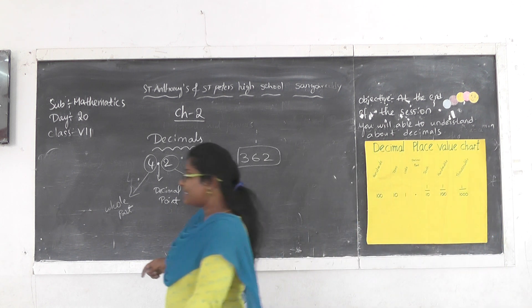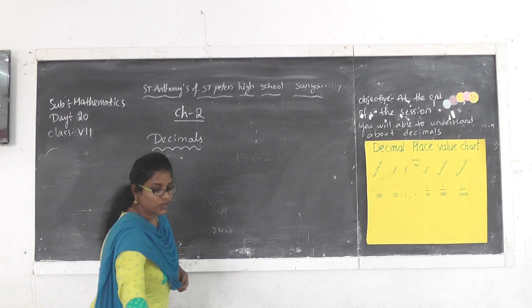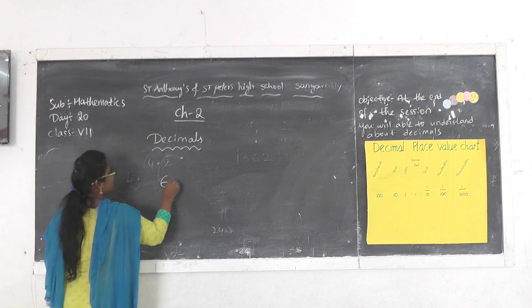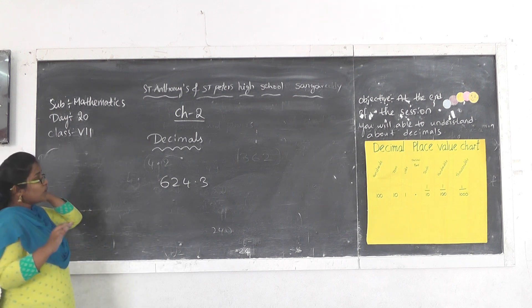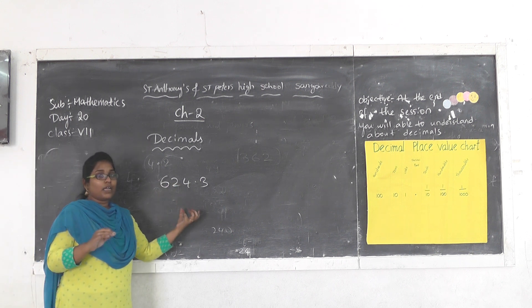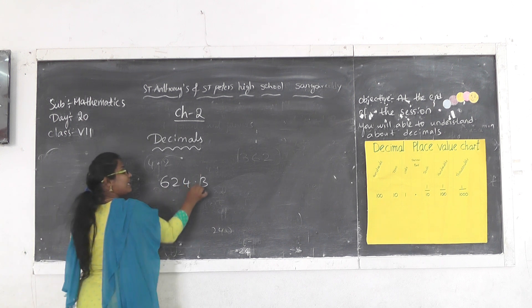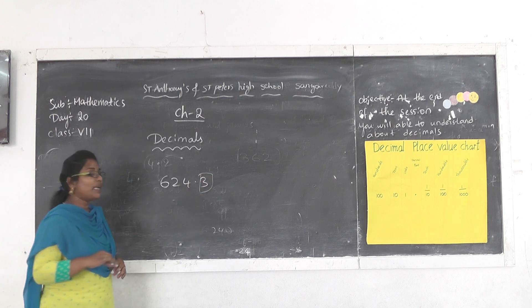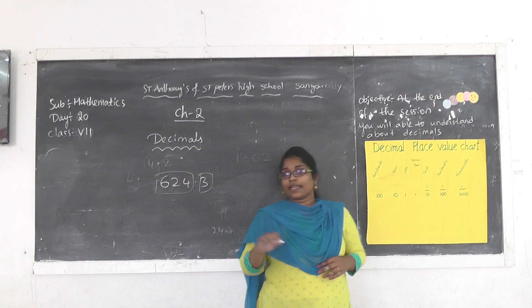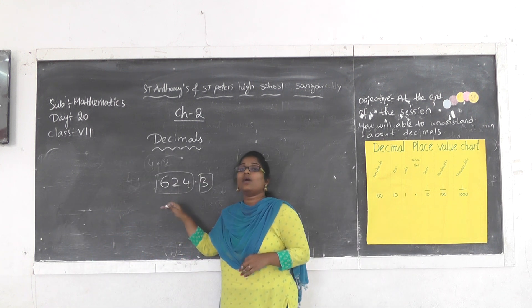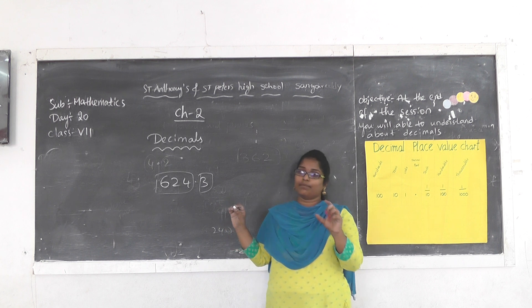Now, how do we read decimal numbers? For example, the number 624.3 — in this number there are two parts. What is the decimal part? 3 is the decimal part. What is the whole part? 624 is the whole part. Point left side is the whole number part; point right side is the decimal part.